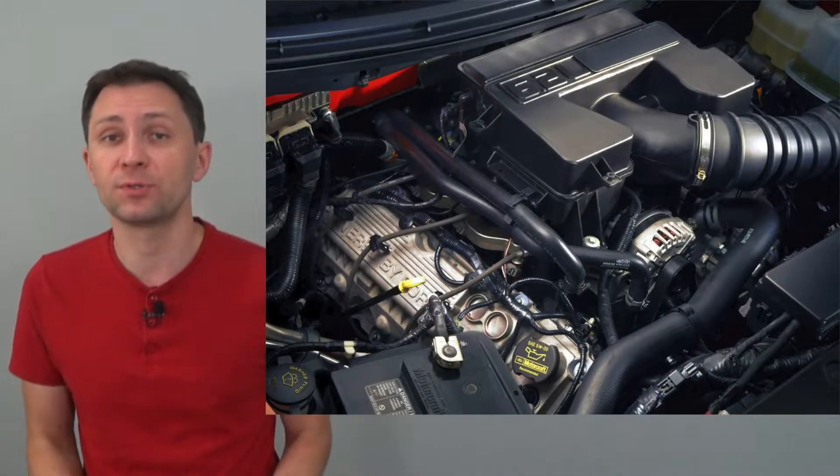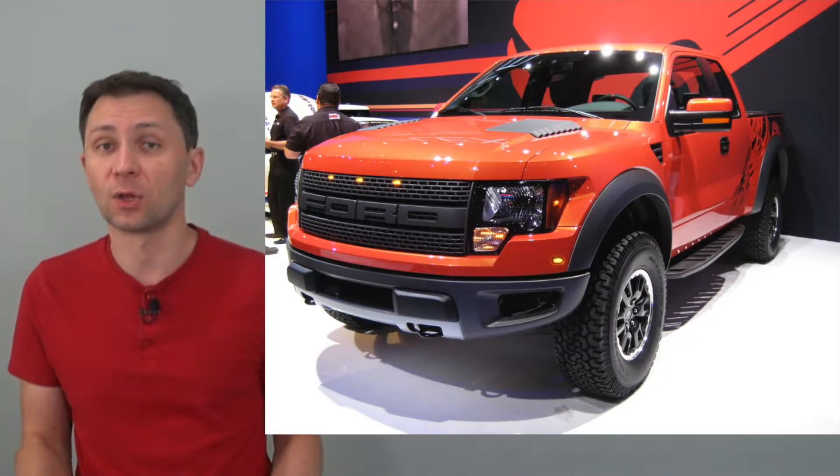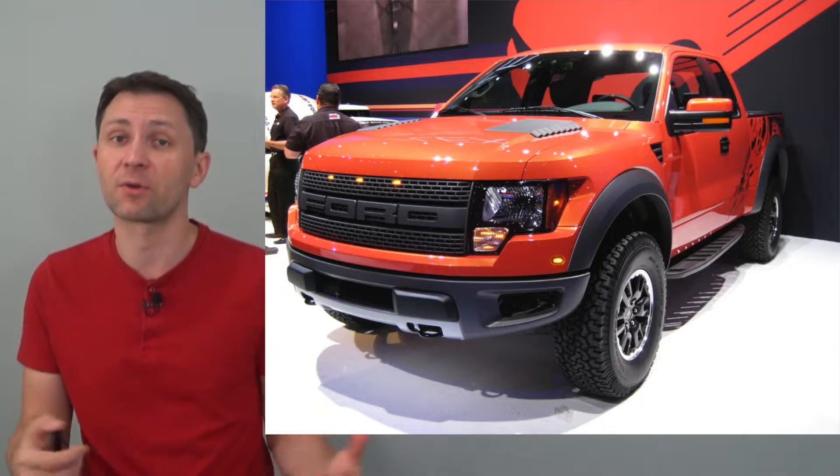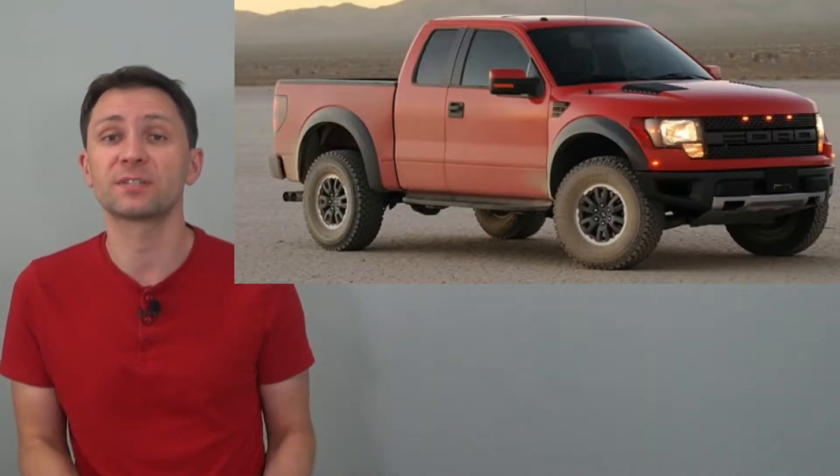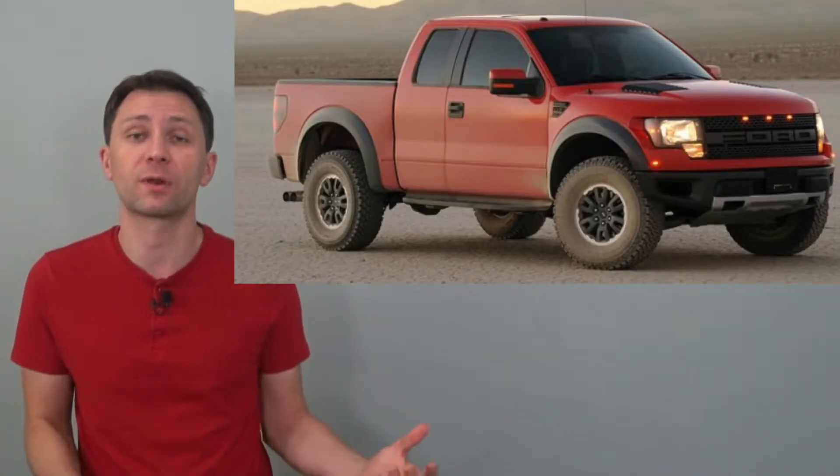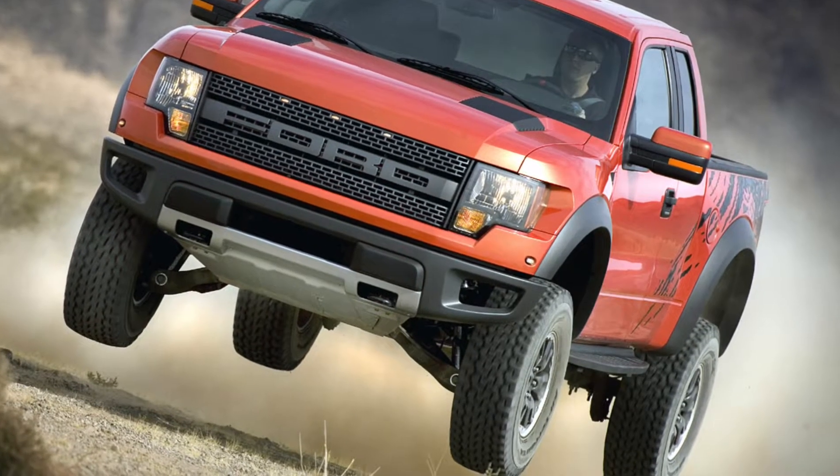It had a big 6.2-liter V8 engine with 411 horsepower, long travel suspension, and an aggressive appearance compared to the regular F-150. It had a Raptor exclusive suspension setup with a wider track than the regular F-150. So the Raptor was purpose-built for serious off-roading.